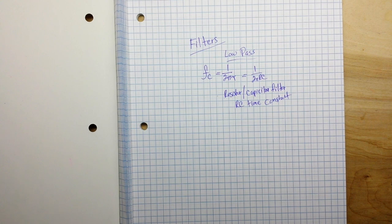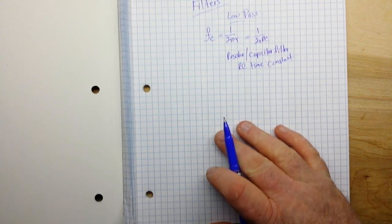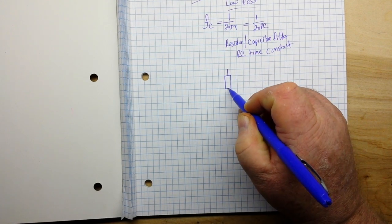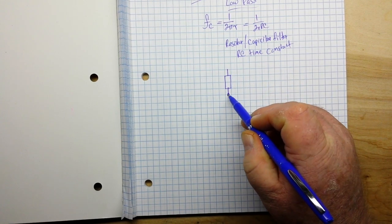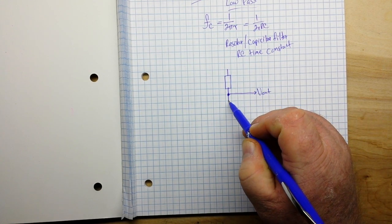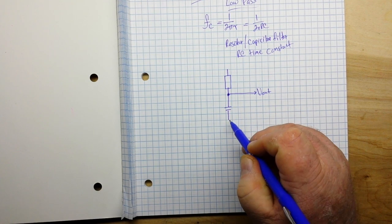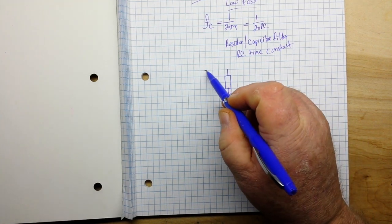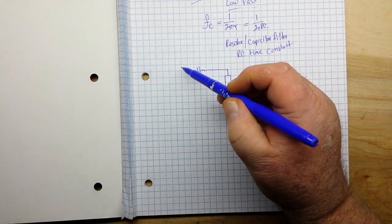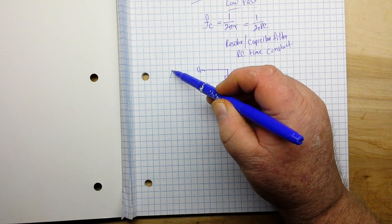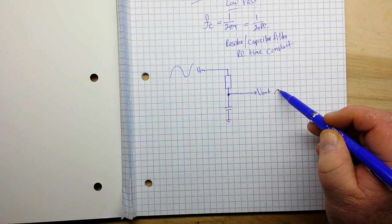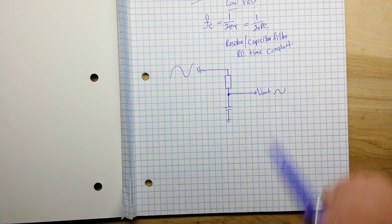So the next question is, how do we set it up? Well, it's pretty simple. For example, we start with a resistor, and then we have our V out, and then we have our capacitor going to ground. And here we have V in. So we bring in our signal here. It passes through the filter here and comes out like that. Pretty simple, right?